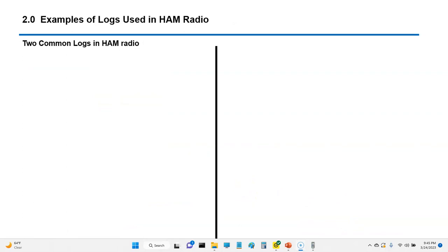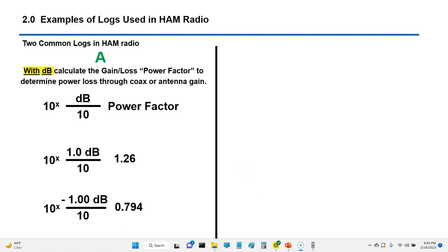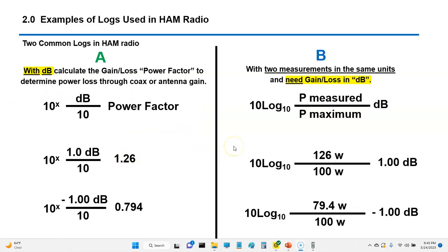In ham radio there's essentially two common formulas that you're going to use, and it depends on what information is given in the particular question or scenario. If you have the decibels available in your scenario or data sheet, you would use this formula here. If you did not have the decibels and the question is asking you for the decibels but giving you the same units - for example watts, maximum power and power measured - with this formula here you could calculate the decibels. These are the buttons here on the TI-30Xs which is what I'm using in today's video.